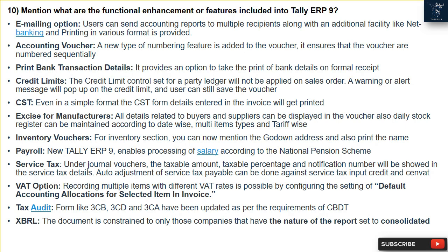CST: even in a simple format, the CST form details entered in the invoice will get printed. Excise for manufacturers: all details related to buyers and suppliers can be displayed in the voucher; a daily stock register can be maintained according to date, multi-item types, and tariff wise. Inventory vouchers: you can now mention the godown address and print the name. Payroll: Tally ERP9 enables processing of salary according to the National Pension Scheme. Service tax: the taxable amount, taxable percentage, and notification number will be shown in the service tax details; auto adjustment of service tax payable can be done against service tax input credit and CENVAT.